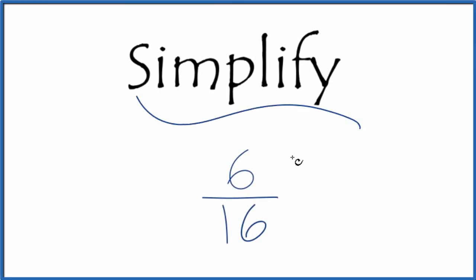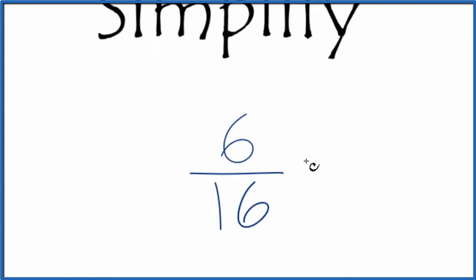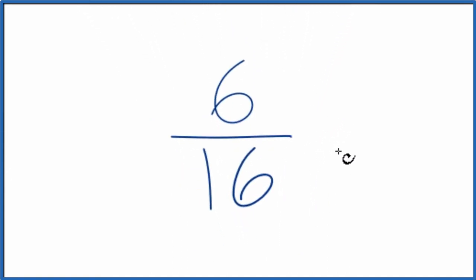Okay, let's simplify the fraction 6-sixteenths. And here's how we'll do it. We're looking for another fraction that's equal, it's equivalent to 6 over 16, it's just we put it in lowest terms. So let's find a common factor that goes into 6 and into 16.